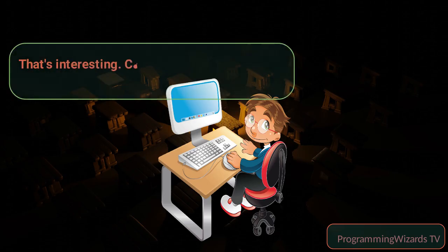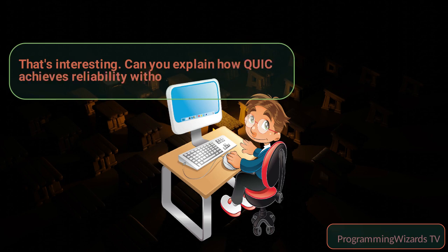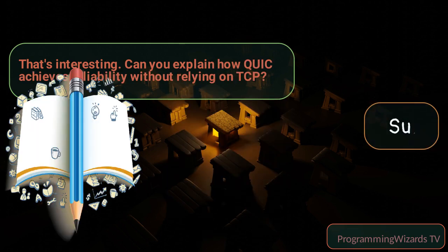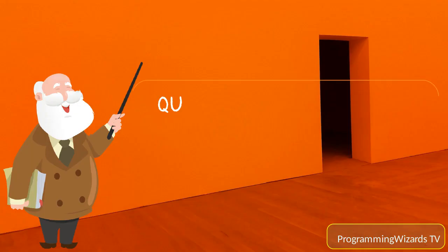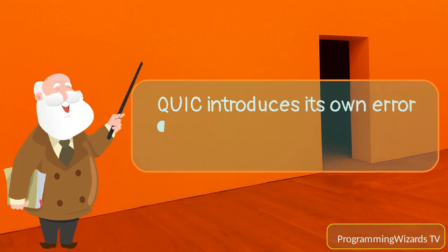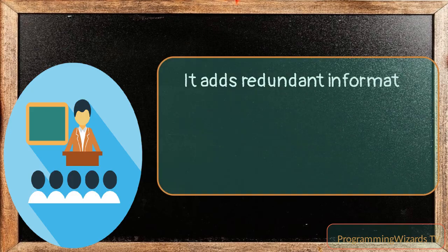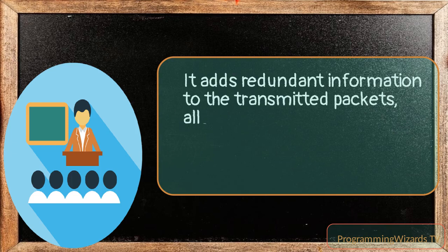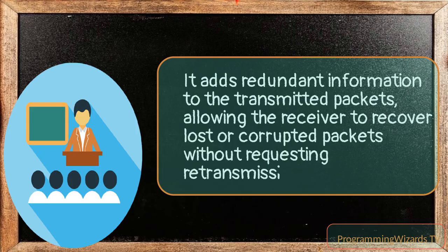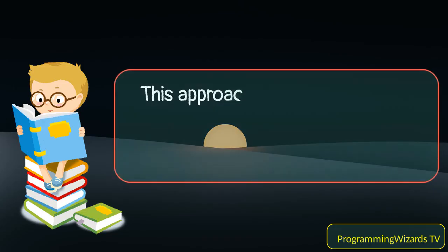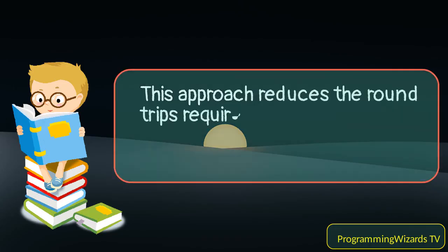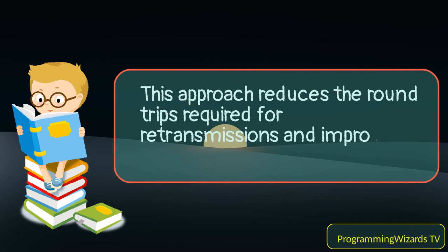That's interesting. Can you explain how QUIC achieves reliability without relying on TCP? Sure. QUIC introduces its own error correction mechanism called Forward Error Correction, FEC. It adds redundant information to the transmitted packets, allowing the receiver to recover lost or corrupted packets without requesting retransmission. This approach reduces the round trips required for retransmissions and improves the overall efficiency.